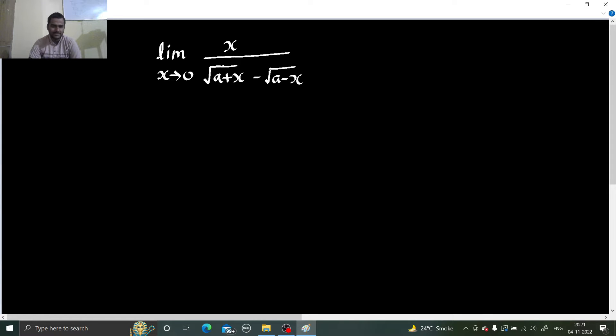So if you try to put x as 0, you will get numerator as 0 and denominator as under root a minus under root a which is also 0. So currently this is a 0 by 0 form. Solving a limit means removing this form of 0 by 0 because it is an indeterminate form. So how to remove this?